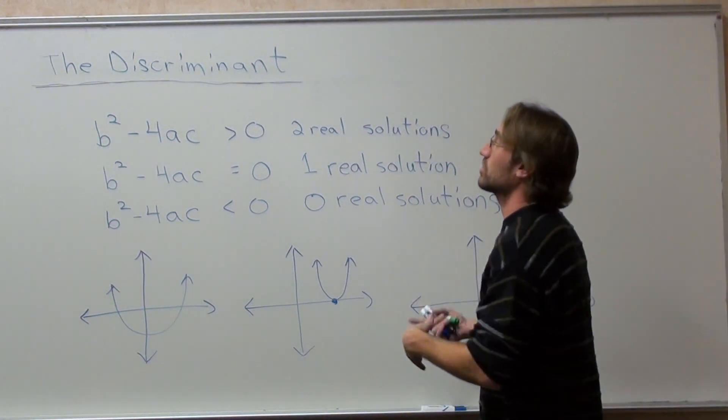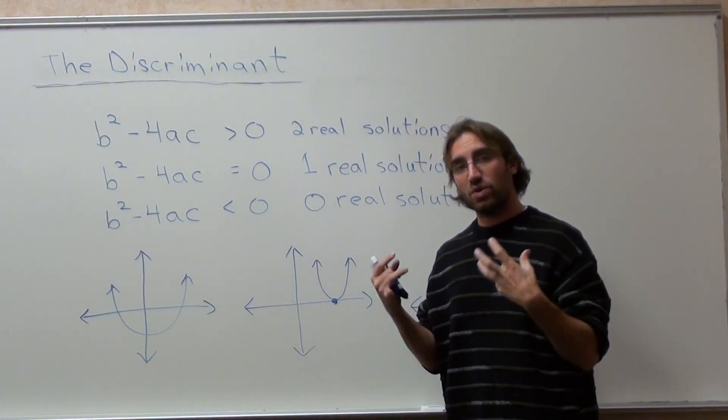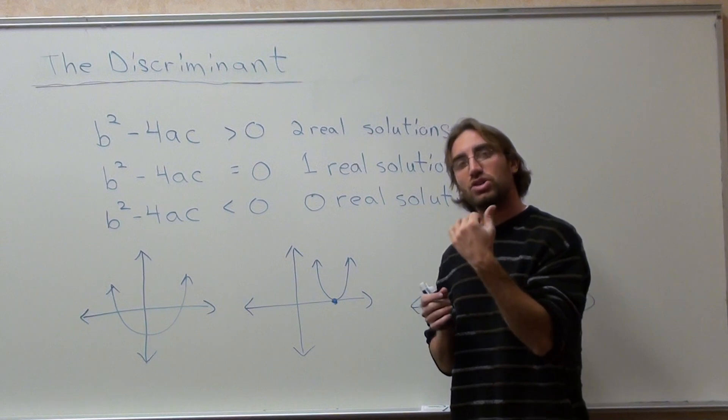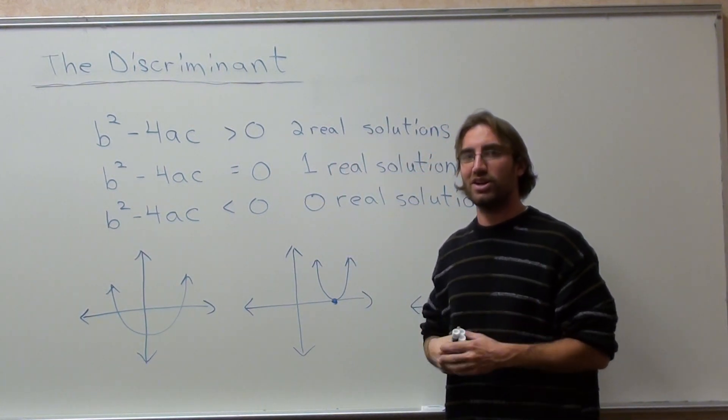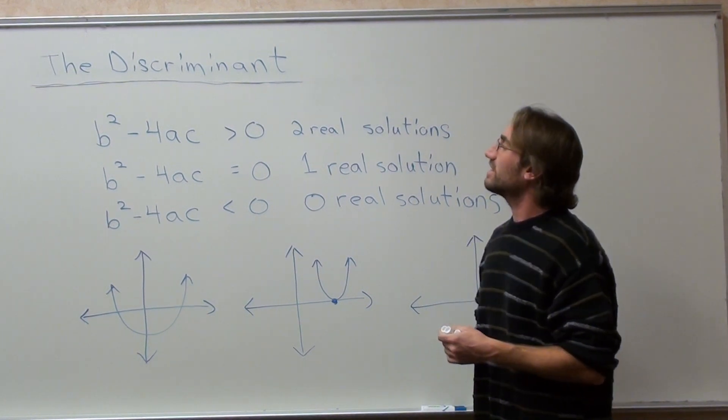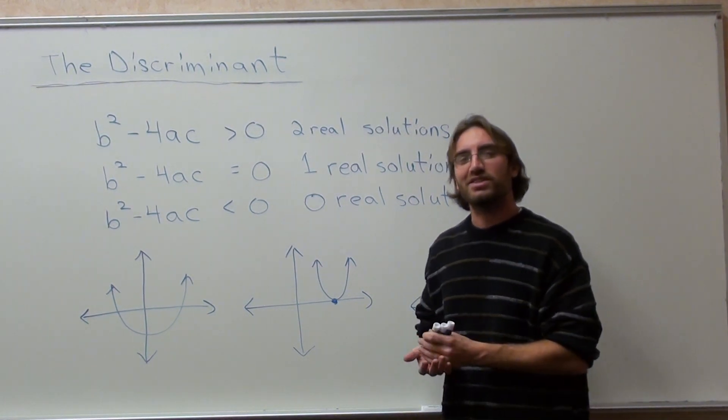Hello, guys. We're doing the discriminant, which is basically part of the quadratic formula. It's the part under the square root. I'm going to explain something very quickly and see how it goes. And I'll tell you a story about this. It's actually pretty cool.